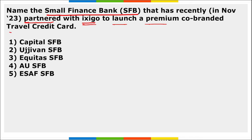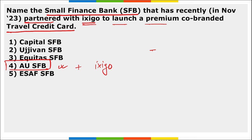Next: name the small finance bank that has recently partnered with IXIGO to launch a premium co-branded travel credit card. It is AU Small Finance Bank. They partnered with IXIGO and announced the launch of the IXIGO AU co-branded credit card, enhancing the travel experience of modern travelers in semi-urban areas and targeting Tier 2 and Tier 3 markets.